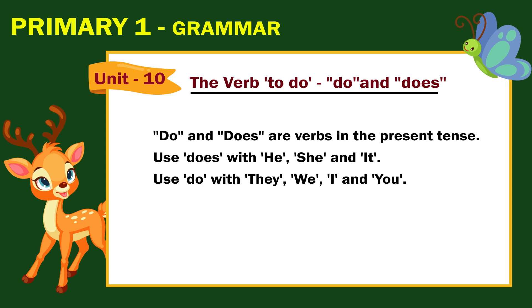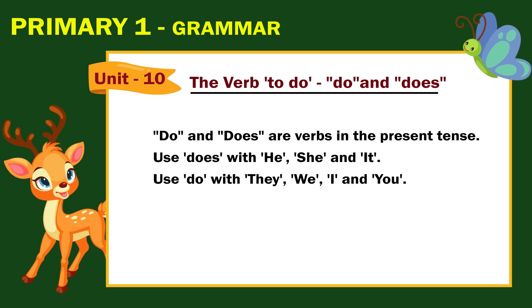The verb to do: do and does. Do and does are verbs in the present tense. Use does with he, she, and it. Use do with they, we, I, and you.